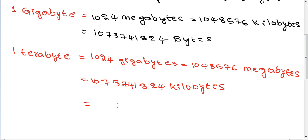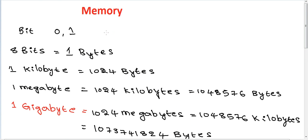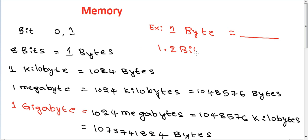One terabyte equals 1,099,511,627,776 bytes. Understand this. First, memory stores zeros and ones — this is the important bit. Next, example question: one byte equals dash. Options: two bits, five bits.